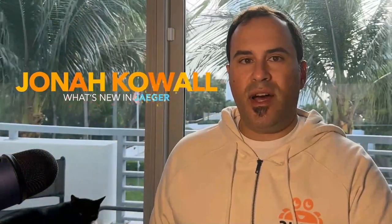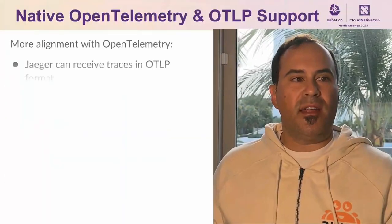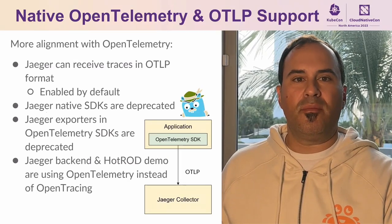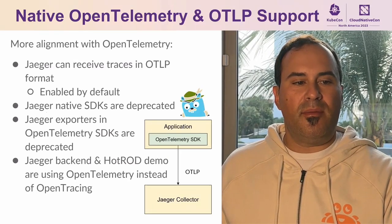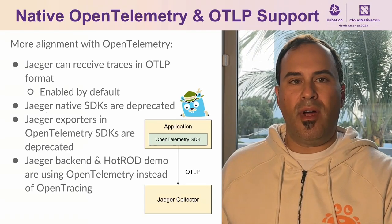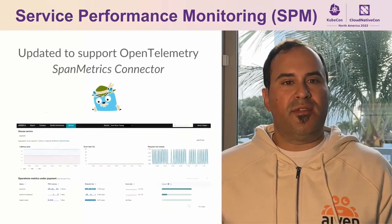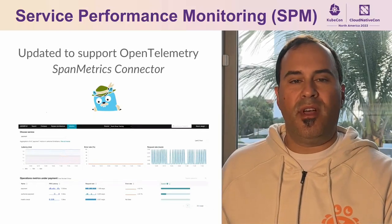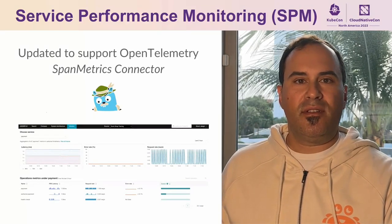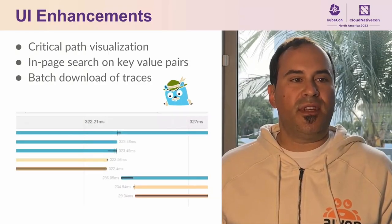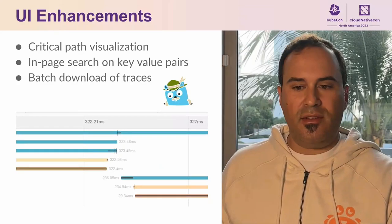My name is Jonah Cowell, and I'm here to tell you what's new with Jaeger. We've added more support for OpenTelemetry, making it native to the project, including the protocol itself. We've also updated the backend and hot rod demo applications to use OpenTelemetry, making everything aligned with the project. We've enhanced service performance monitoring, supporting OpenTelemetry span metrics connector. We've also added new UI enhancements including critical path visualization, in-page search, and batch download of traces.